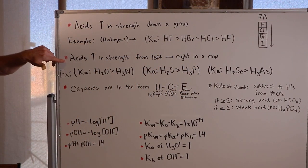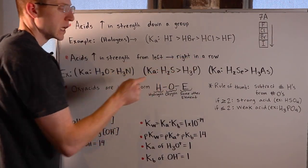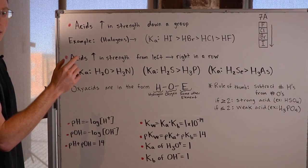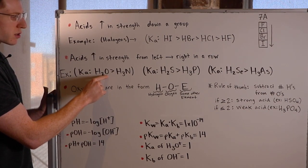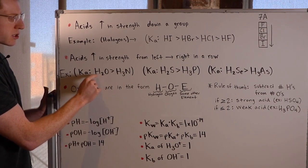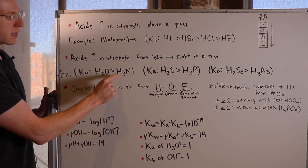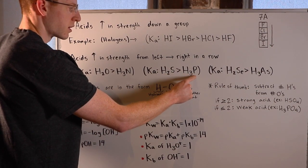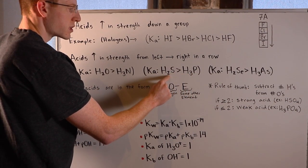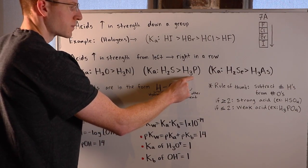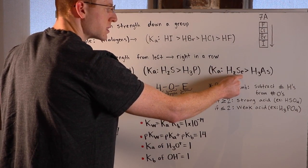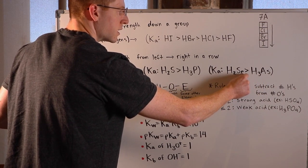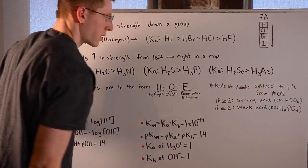Next, acids increase in strength from left to right in a row on the periodic table. You can see again, I've listed out some Ka comparisons here. Oxygen is to the right of nitrogen, so H2O is stronger than H3N as an acid. Sulfur is to the right of phosphorus on the periodic table, so it is stronger as an acid than H3P. H2Se is a stronger acid than H3As because selenium is to the right of arsenic on the periodic table.